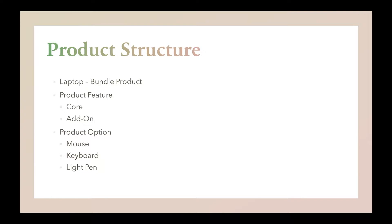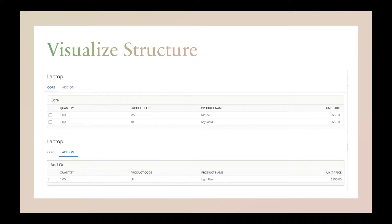There are several product options we are going to configure which will be available under the Laptop bundle: Mouse, Keyboard, and Light. Under the Core feature will be two products — Mouse and Keyboard — and under the Add-on feature will be one product called Light Man. Now let's see how we can create those things in Salesforce CPQ.